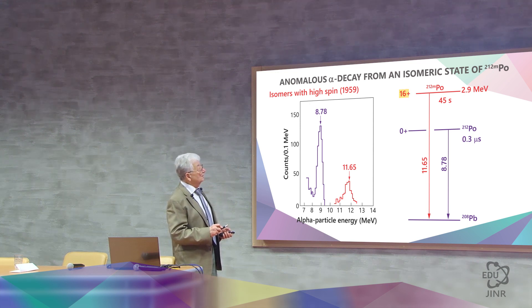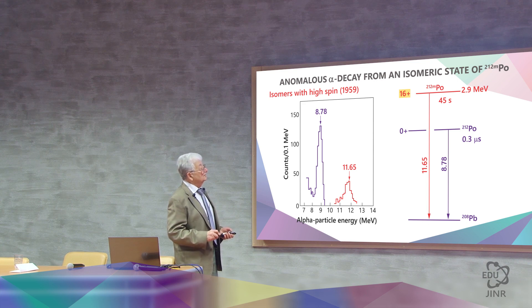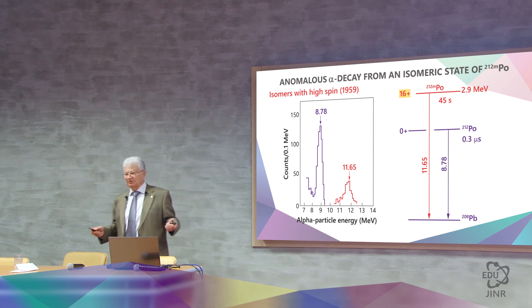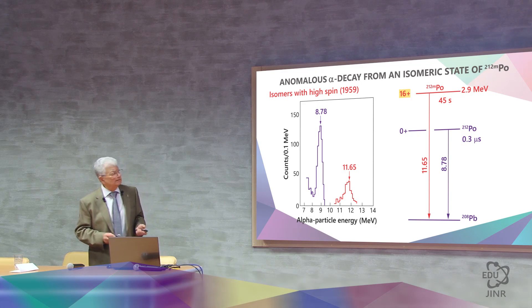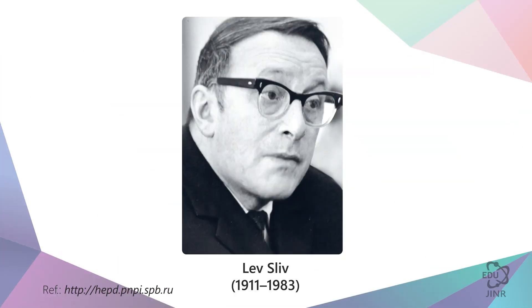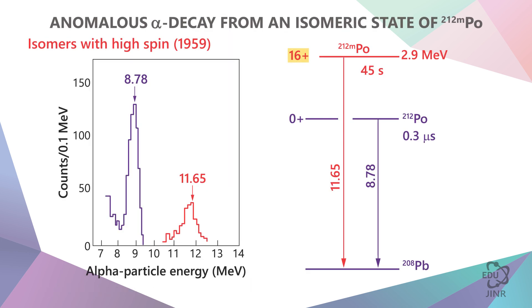This one has a big spin. This means that the alpha particle cannot handle that big moment. It cannot handle the entire spin of 16+. And as Lev Abramovich Sliv from the Leningrad Physics and Technology Institute showed, this is due to the fact that this big spin is partially isomeric. The factor is 10 to the power of 14.